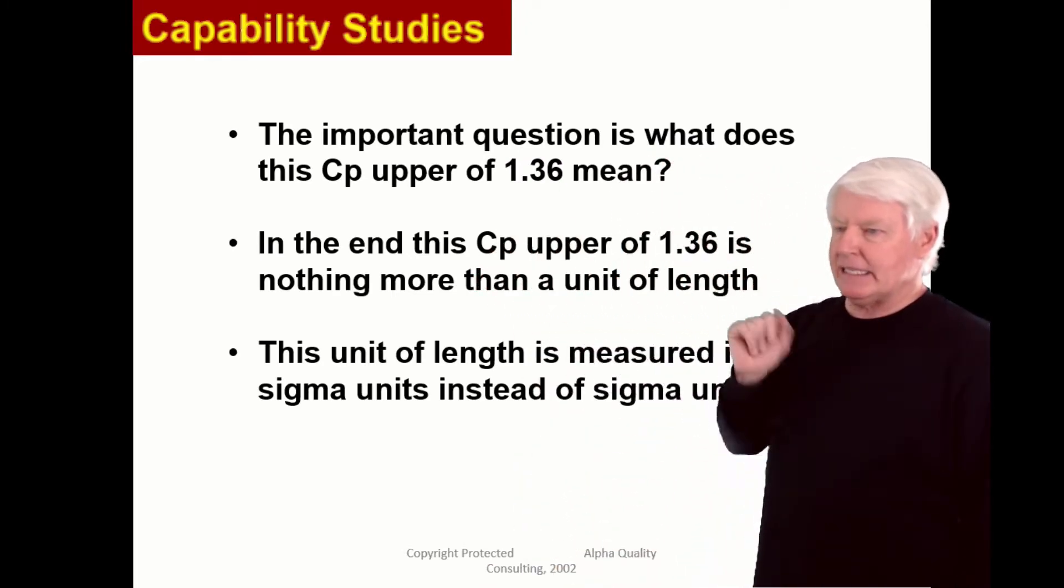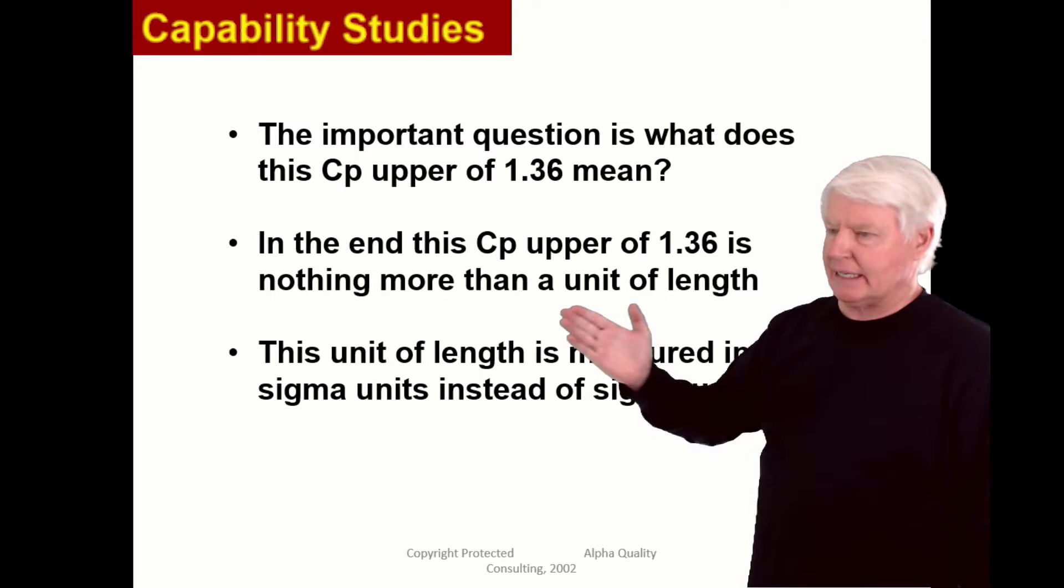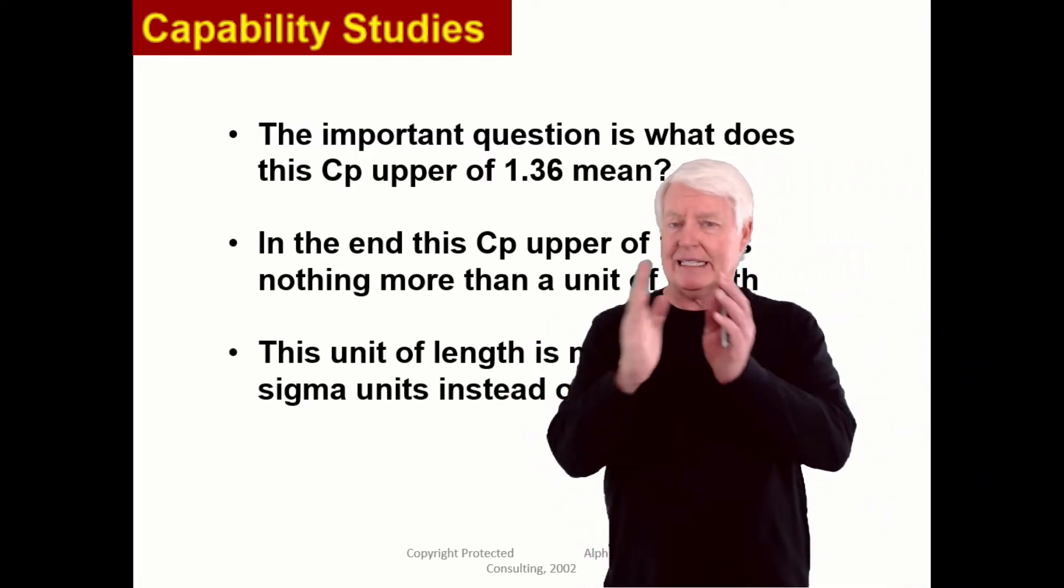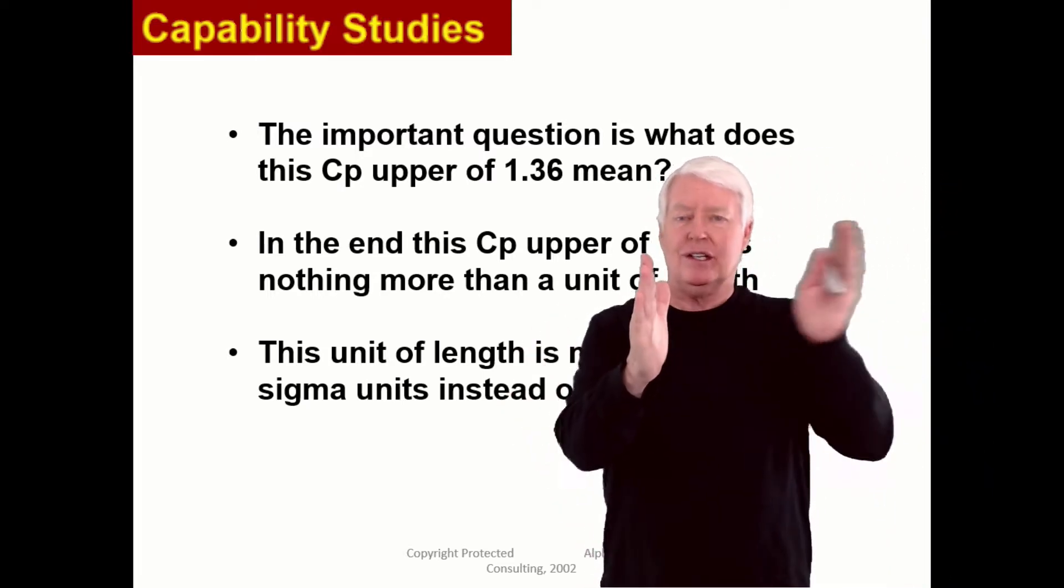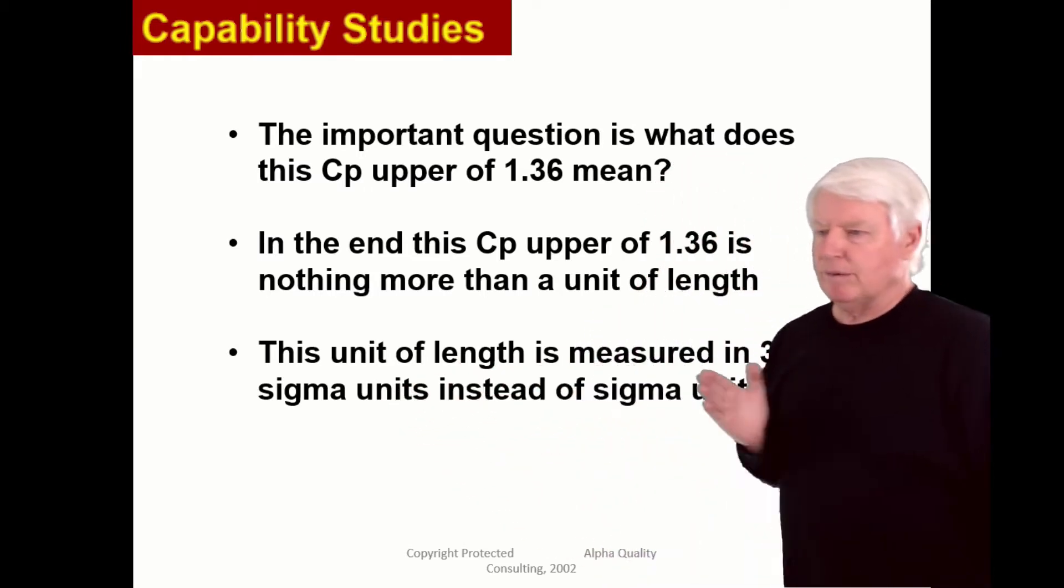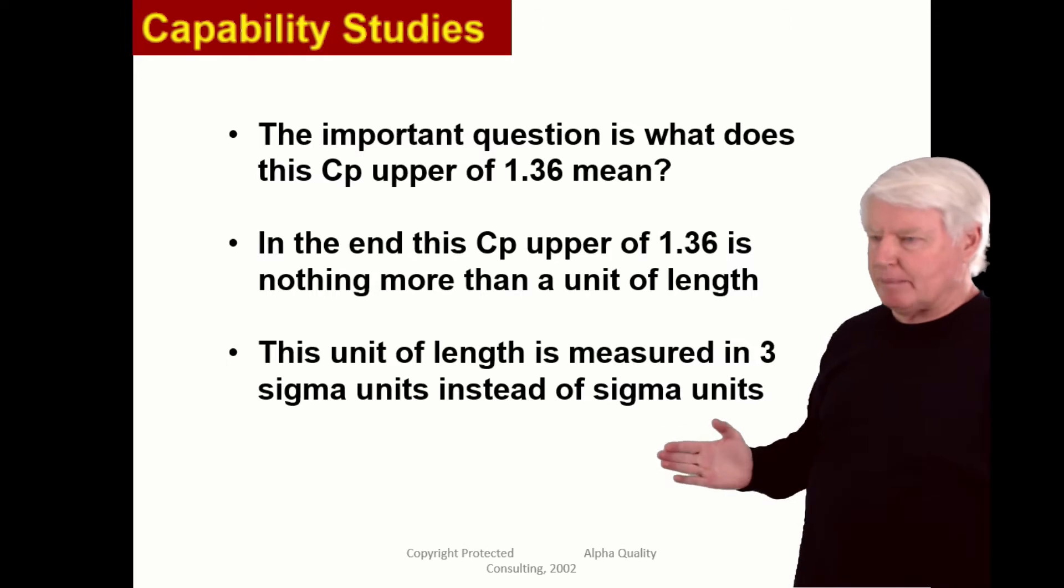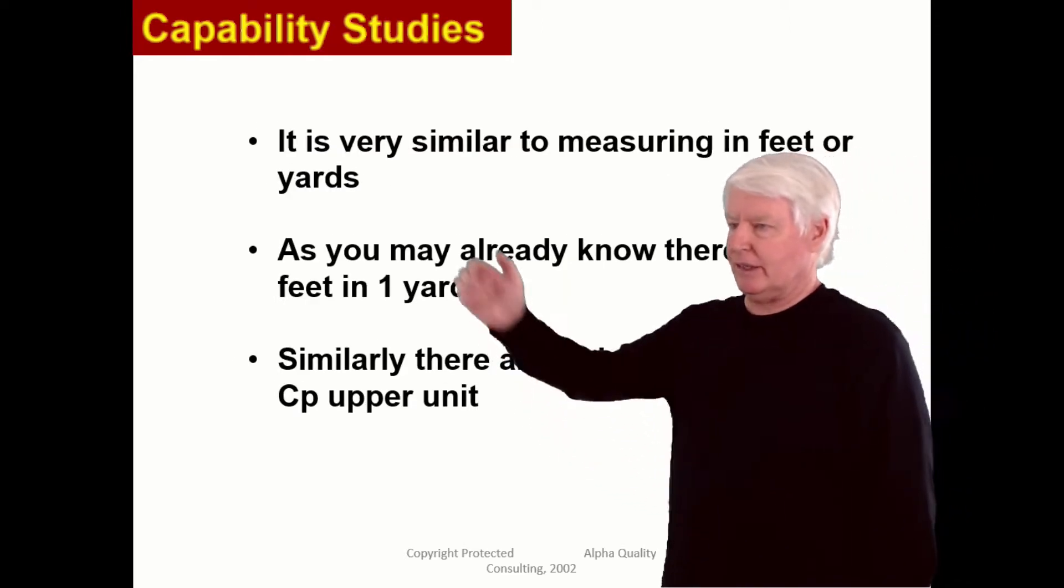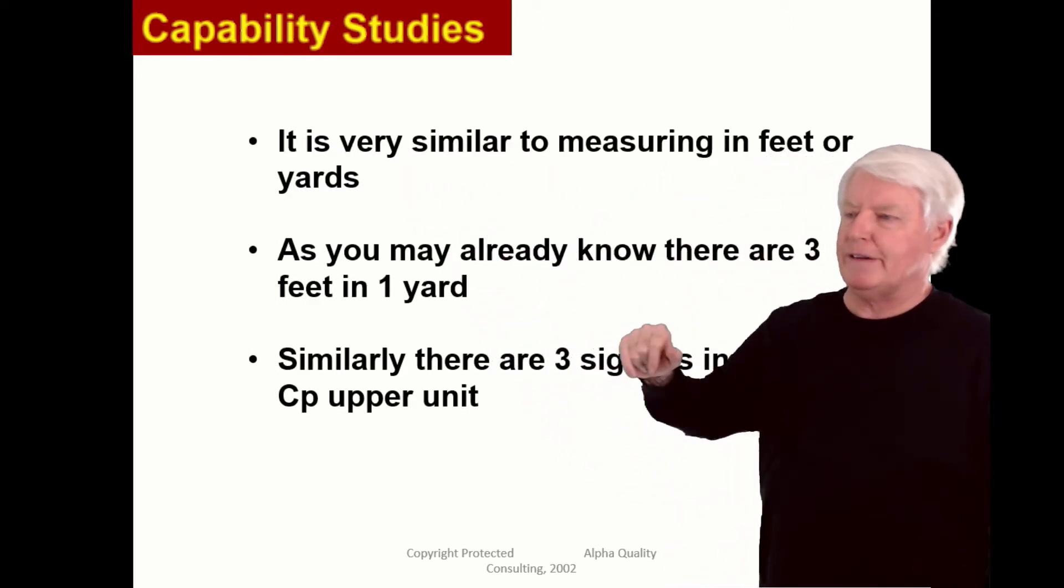In the end, the CP upper of 1.36 is nothing more than a unit of length. It's the distance from the average to the upper spec limit. The unit of length of measure is three sigma units instead of sigma units. It's very similar to measuring in feet or yards.